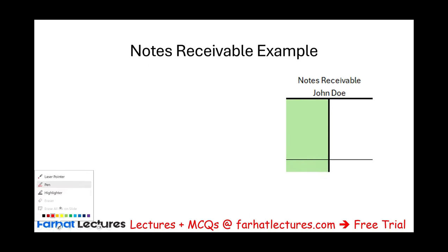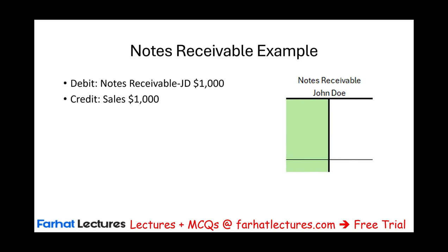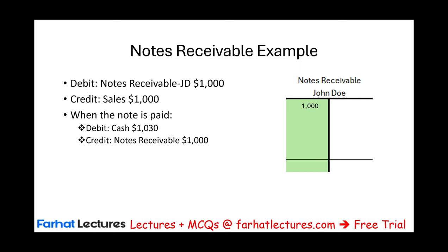Let's complete the example for John Doe. Initially, we recorded $1,000 of Notes Receivable. When John Doe pays the note, he pays $1,030. The company debits Cash for $1,030, credits Notes Receivable for $1,000 — bringing the balance to zero — and records $30 of Interest Revenue.